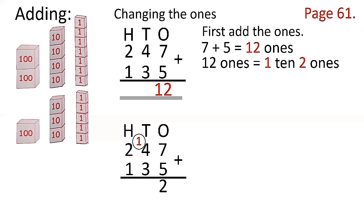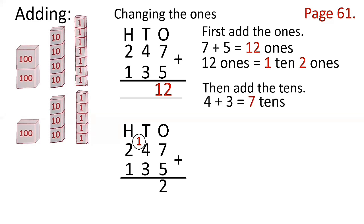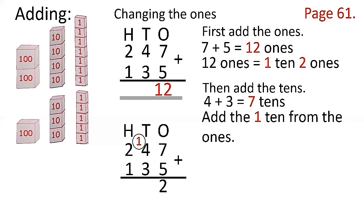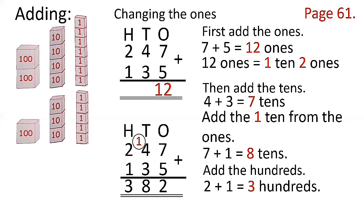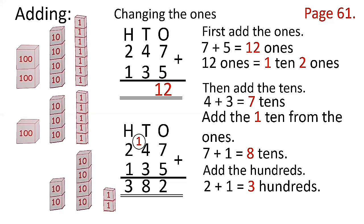Then add the tens: 4 plus 3 is 7 tens, plus the 1 ten carried from the ones, that is 8 tens, or 80. Then for the hundreds: 1 plus 2 is 3 hundreds. Take note: 10 ones makes 1 ten.